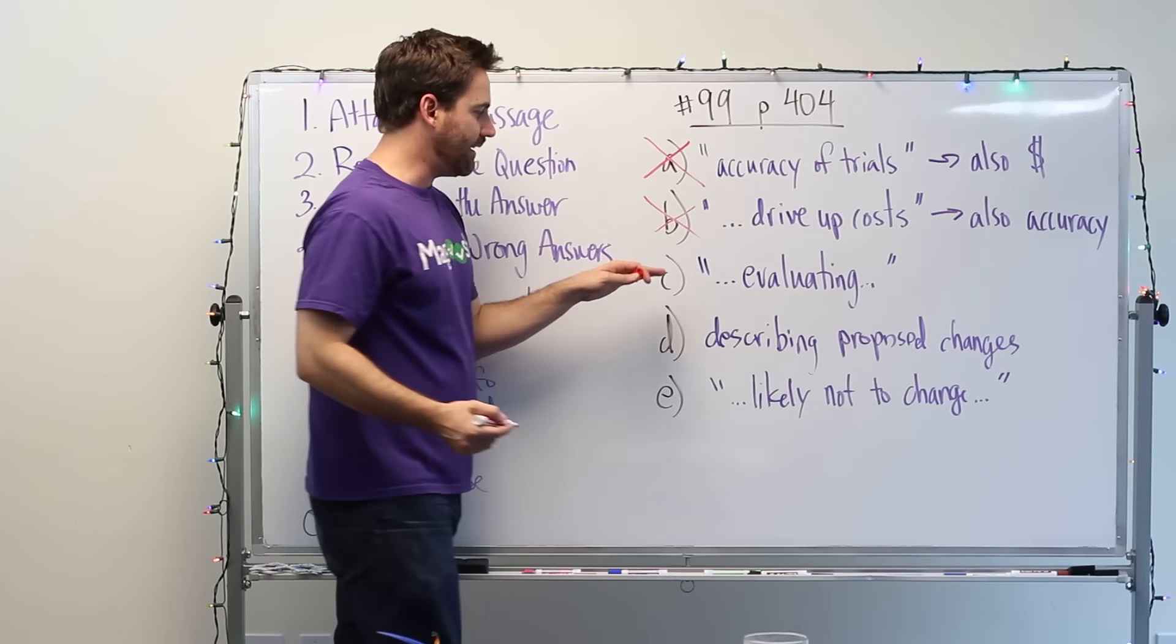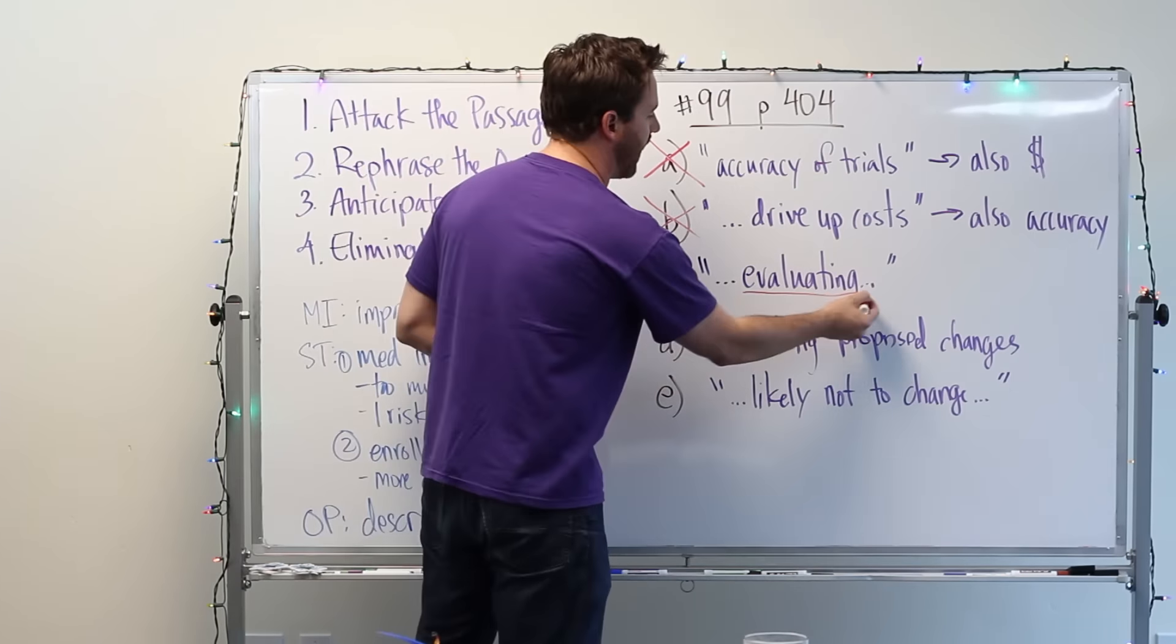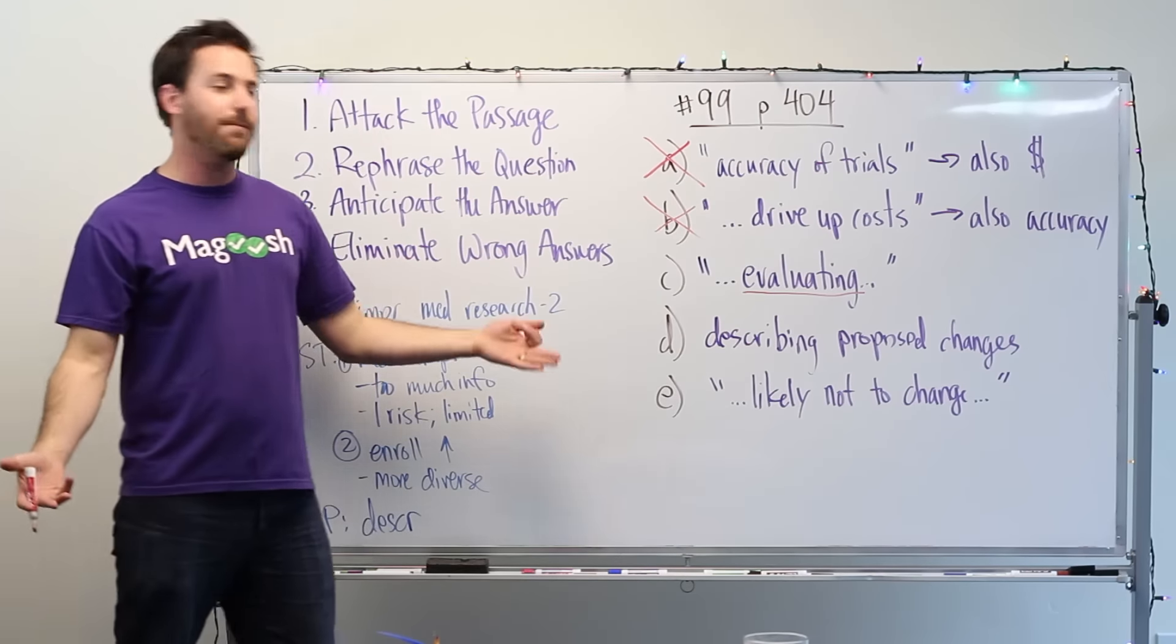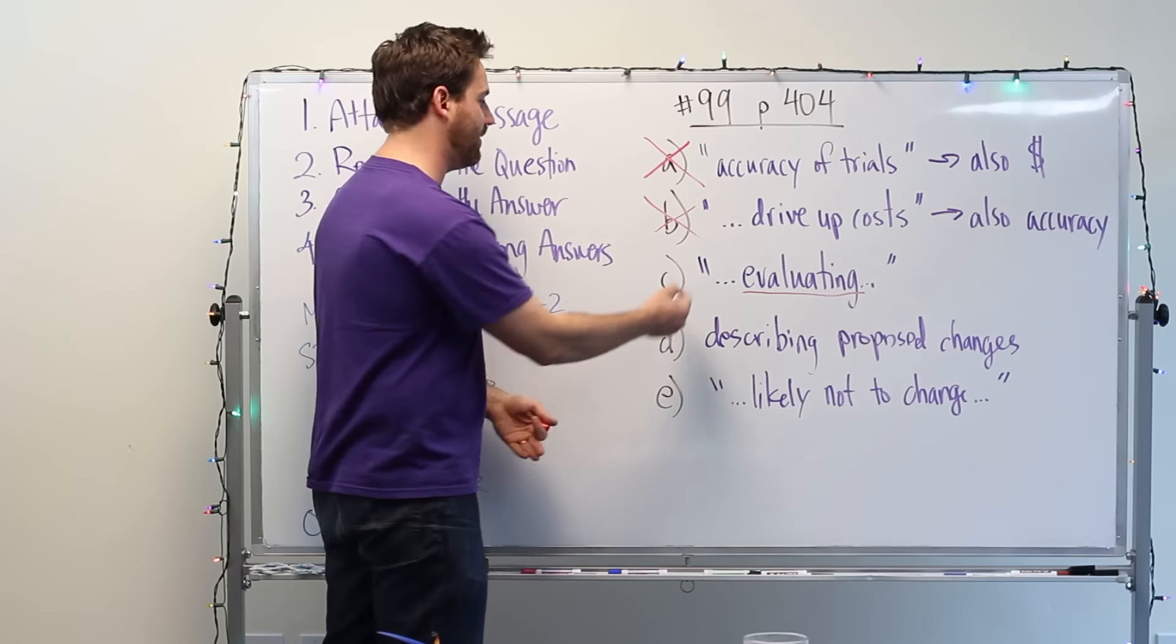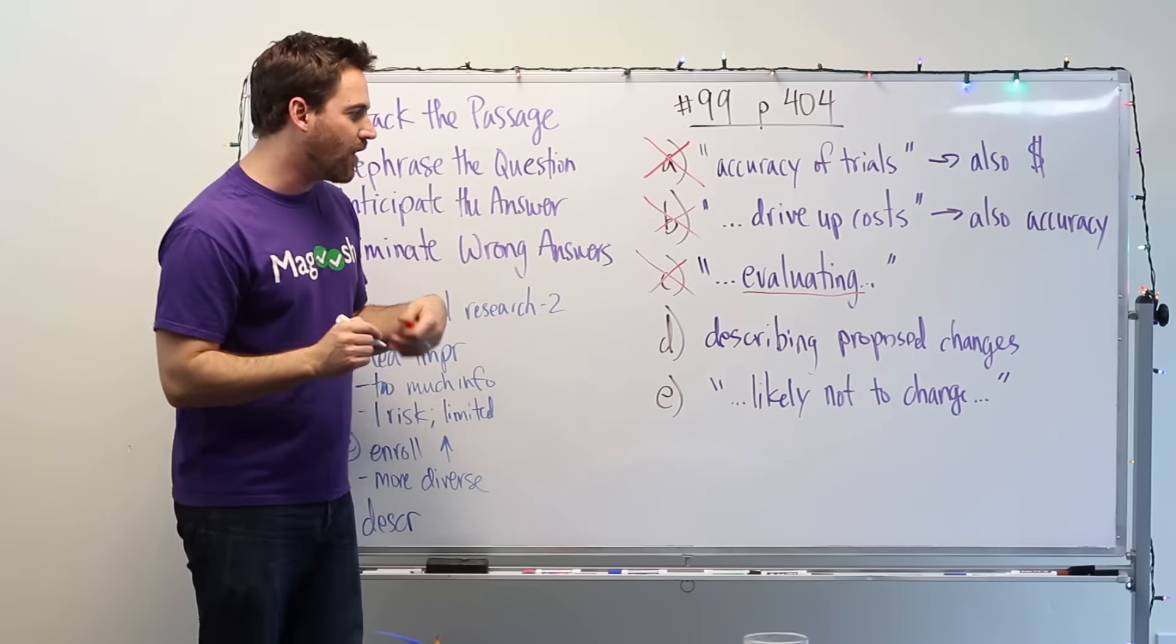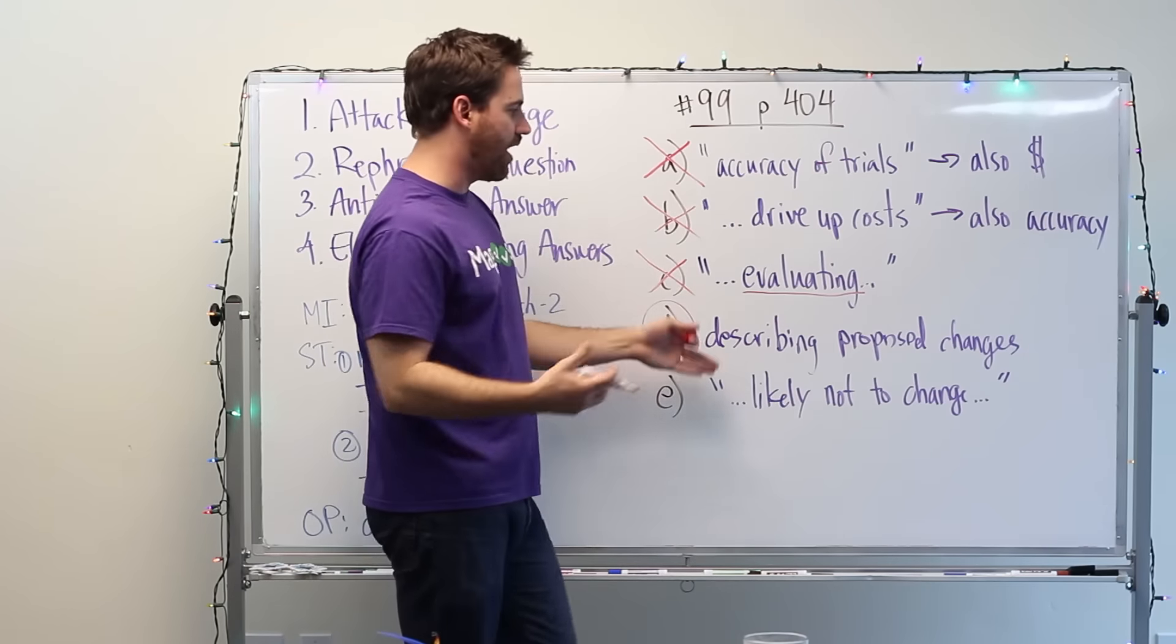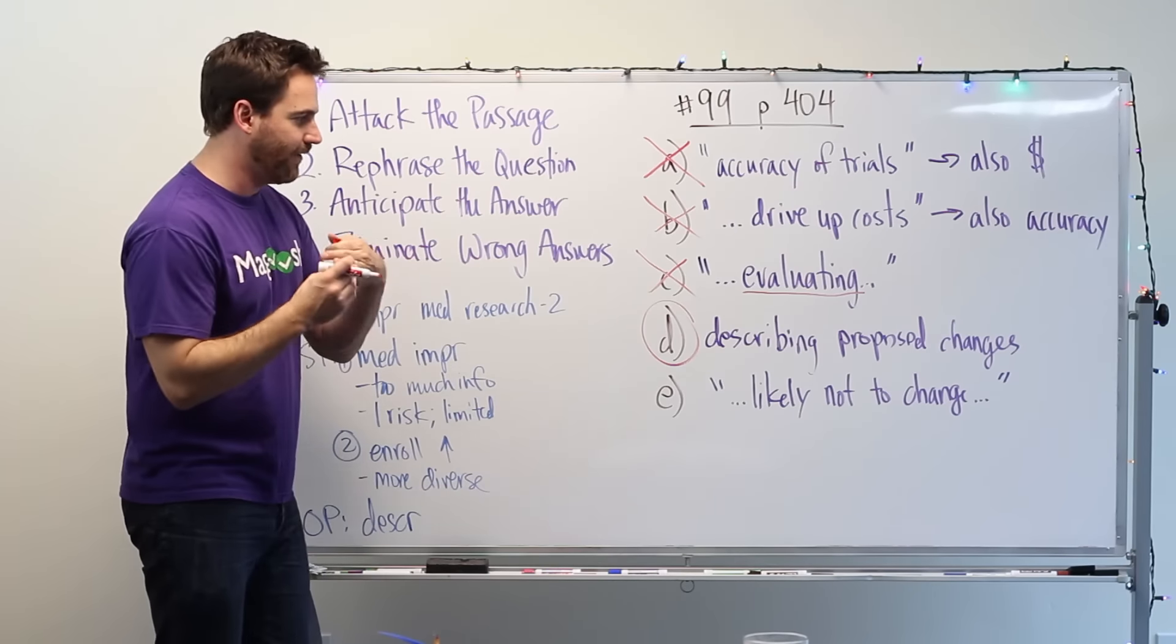So we can eliminate B. C, one key word here to pay attention to, evaluating. There is no evaluation going on in the passage. Remember, it's descriptive. We're just describing this thing. This is a distortion of what is happening in the passage so we can eliminate it. Finally, D, describing proposed changes. Perfect. That's exactly what the passage is doing. It's describing proposed changes to medical research. D is a perfect answer.